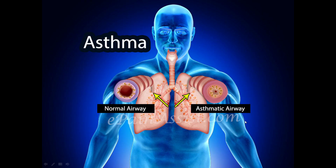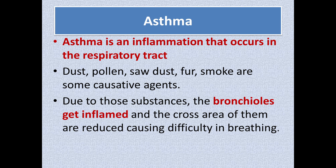Another disease very commonly reported in the respiratory system is asthma. Asthma occurs due to inflammation of the respiratory tract — the respiratory tract gets inflamed and swells. The reasons for causing this condition include inhaling air containing dust, pollen, sawdust, animal fur, or smoke-like particles. When these are inhaled, the inner lining of the respiratory tract becomes inflamed.